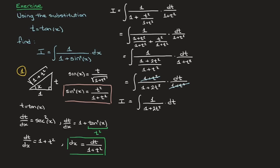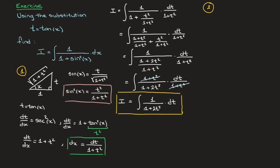That completes step one. We've rewritten our integral in terms of the new variable t in its simplest form. Now we move on to step two, where we need to integrate with respect to t. So I equals the integral of 1 over 1 plus 2t squared dt.